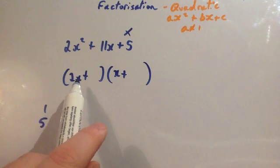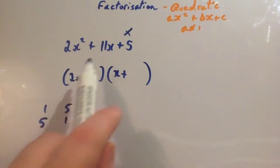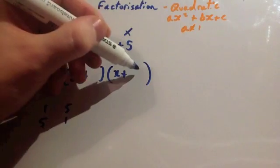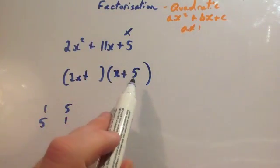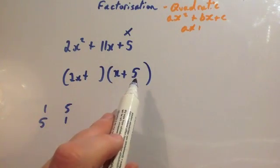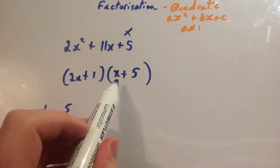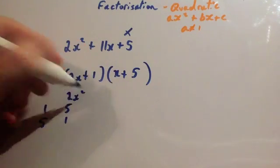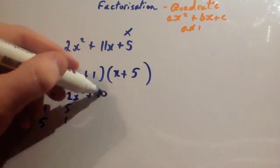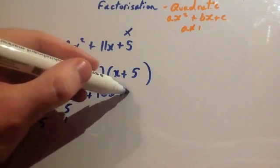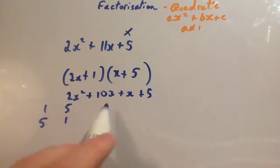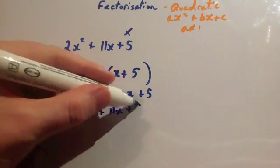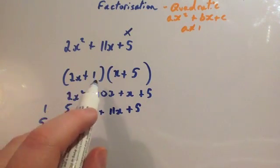You've got 2x times x which is 2x squared, and you're going to have 2x times this number and x times this number. To get 11x, if I put the 5 over here you get 2x times 5 which is 10x, and if you put the 1 here you get x times 1. Using FOIL: 2x times x is 2x squared, 2x times 5 is plus 10x, x times 1 is plus x, and 1 times 5 is plus 5. The two middle terms add to 10x plus x which is 11x plus 5. So the answer is (2x + 1)(x + 5).